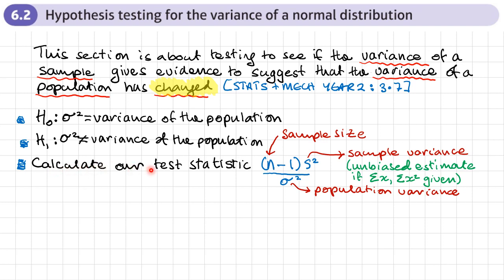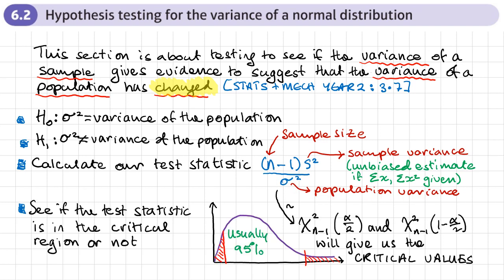The next thing we're going to do is calculate our test statistic, and that's going to be (n − 1) × s² / σ², where n is our sample size and s² is our sample variance. If we're given summary statistics like the sum of x and sum of x squared, then s² is going to be an unbiased estimate, and that will be divided by our population variance σ².